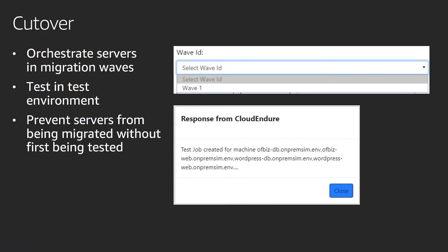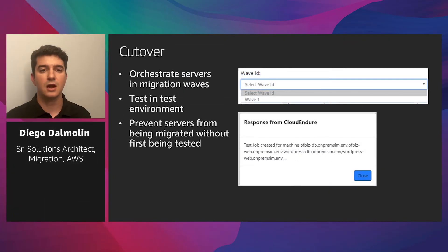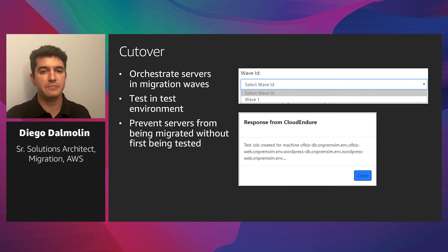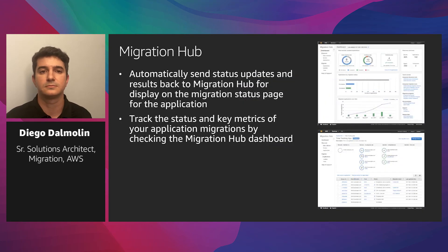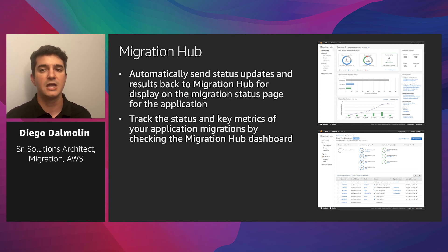As you've already defined the migration waves in the spreadsheet, you can use that information to orchestrate the server cutover. CloudEndure has two migration modes — test and cutover — and they do exactly the same thing. But test mode sets a flag on the server to identify servers that have been tested, and you can use that flag to build guard rails ensuring servers have been tested prior to migrating. CloudEndure and Migration Hub can be integrated — CloudEndure will automatically send status updates to Migration Hub, and you can use that information to keep migration stakeholders up to date with the current status and progress of the migration project.